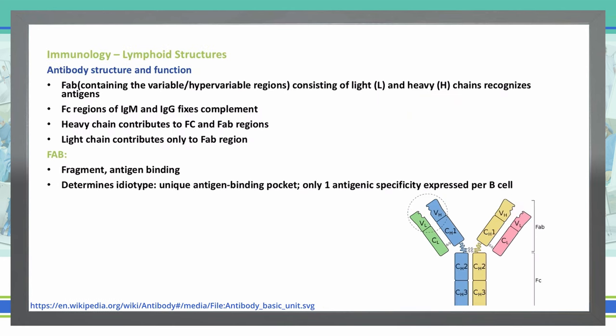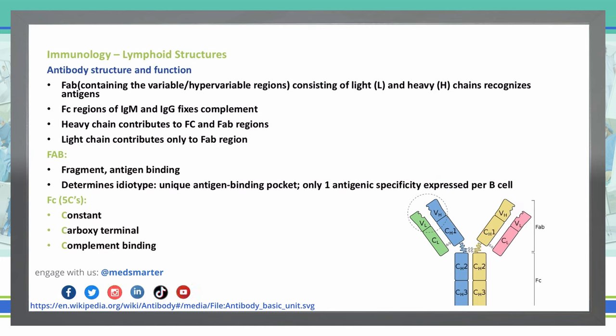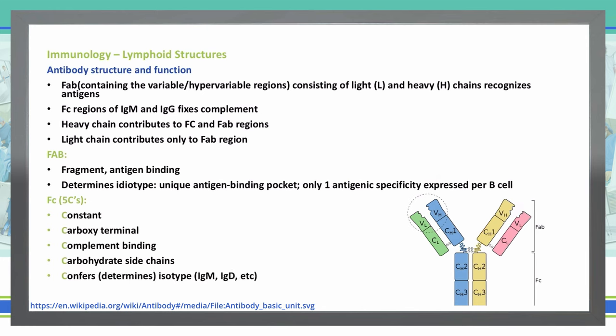Let's look at the Fc region a little closer. The Fc region has what we know as the five C's. The Fc region is constant — it doesn't change regardless of the antigen. It has a carboxy terminal end. It binds complement — there's your fifth C of complement binding. It has carbohydrate side chains that help compose it. And the Fc region confers the isotype — so whether we're talking about IgM, IgG, IgD, or whatever. Those are the five C's associated with the Fc region of the antibody.